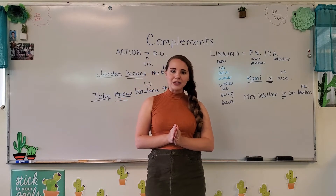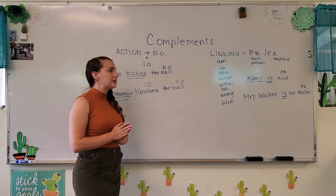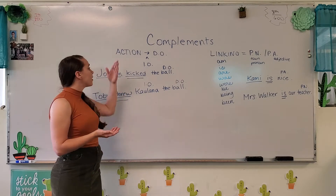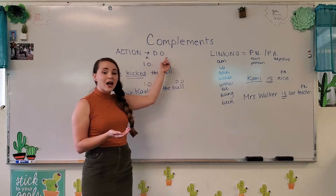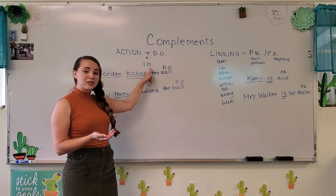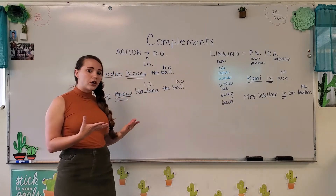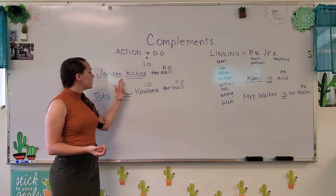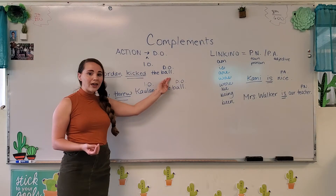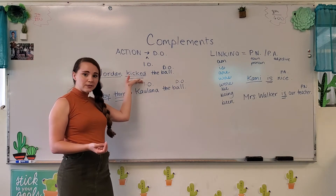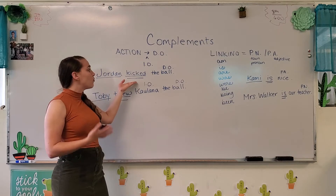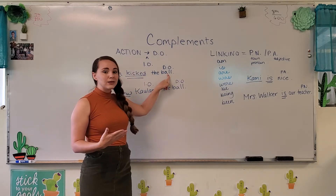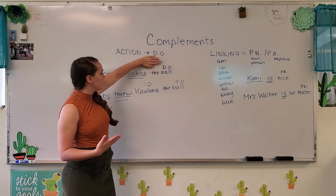So about complements, I want to remind you of a few things — the different complements for the different verbs. Action verbs get direct objects and sometimes indirect objects. An action verb is something you can do. Right here I have an example: Jordan kicked the ball. So the action is kicked. And who kicked? Jordan kicked. And then when you ask the question, what did he kick? He kicked the ball.